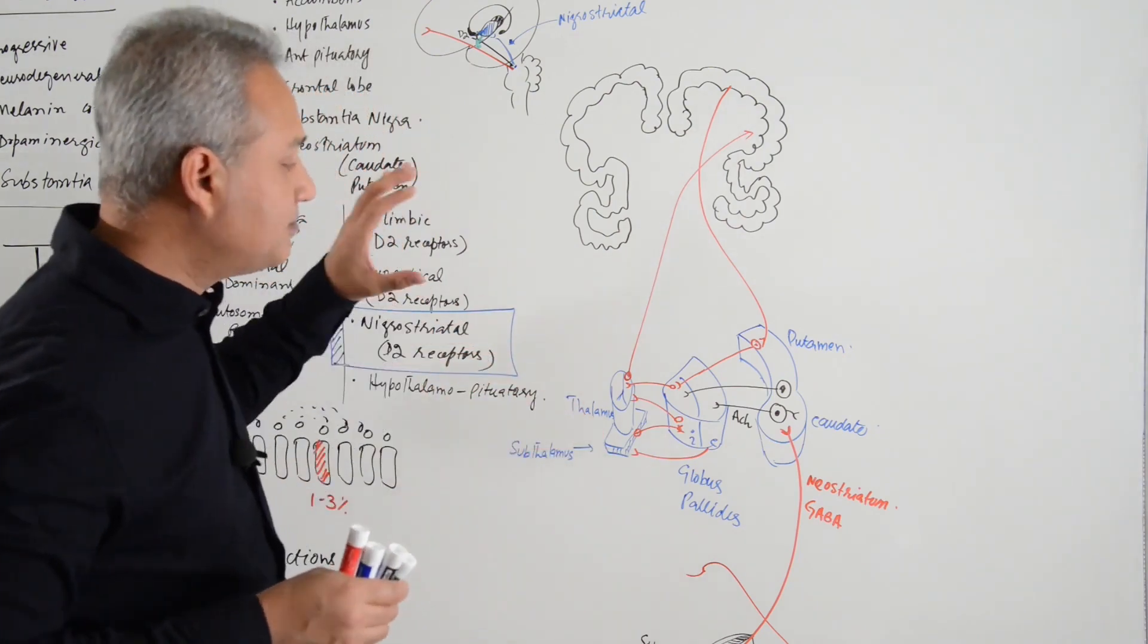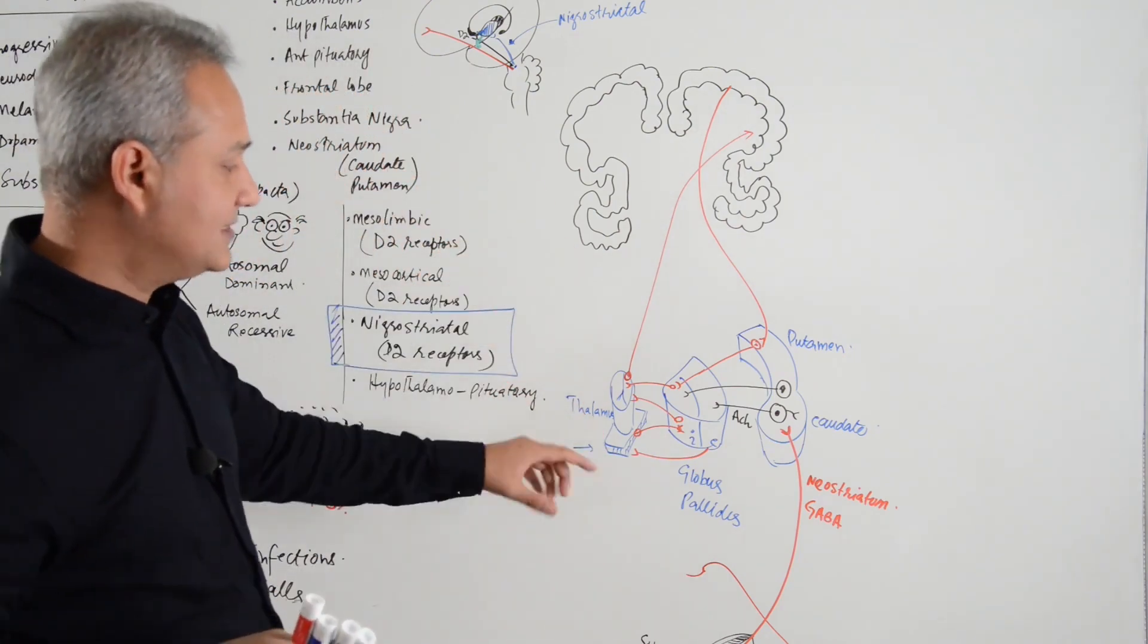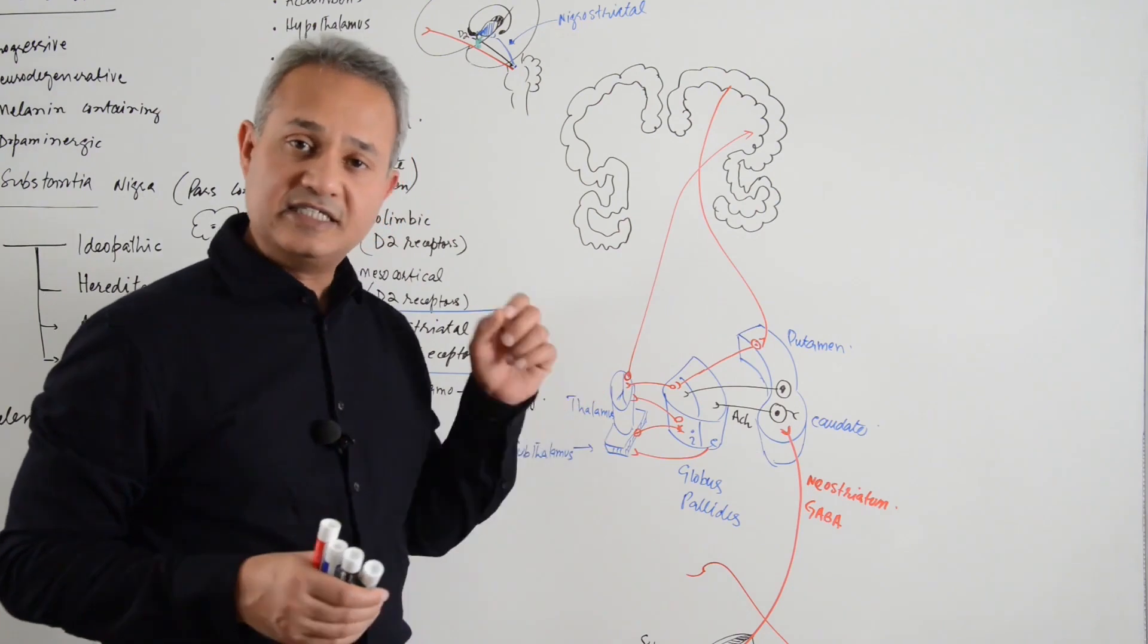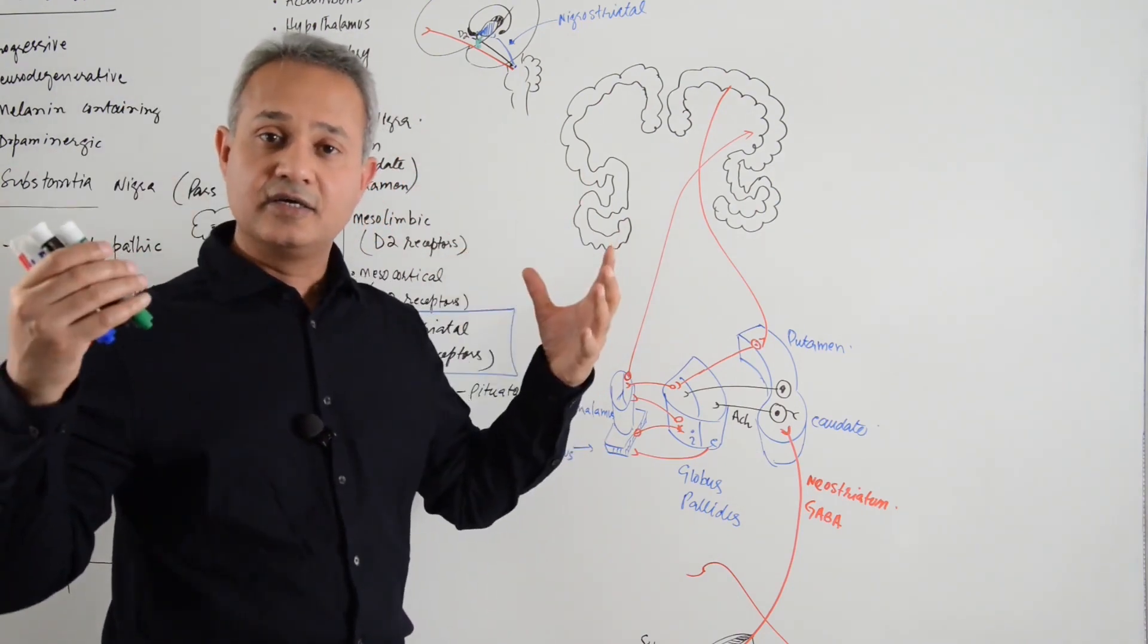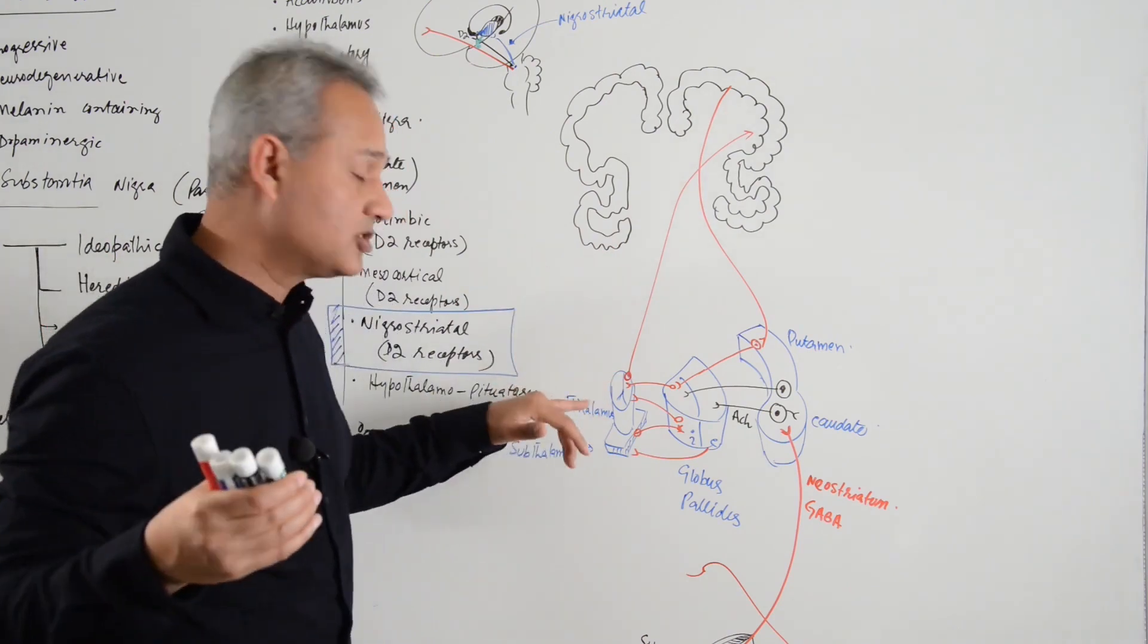What is the basic problem here? The basic problem is this. Subthalamus's general function is to keep the motor area excited. Sorry, I meant thalamus, not the subthalamus.